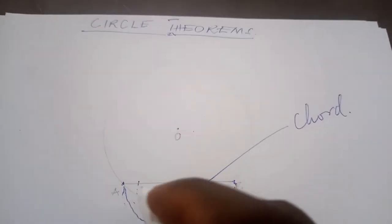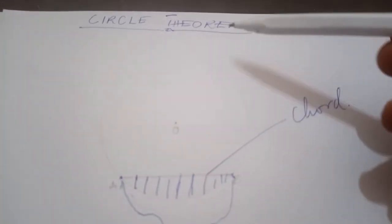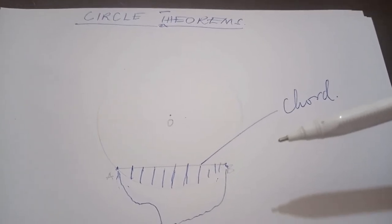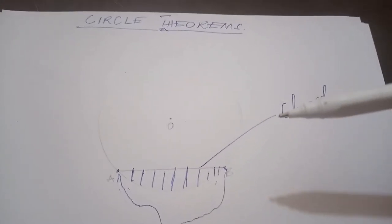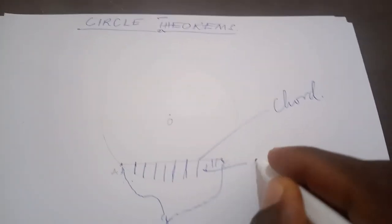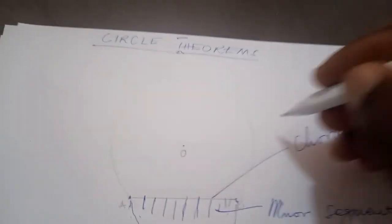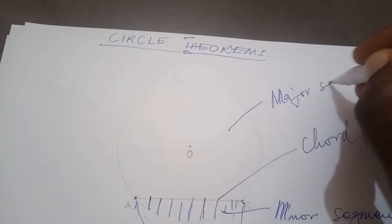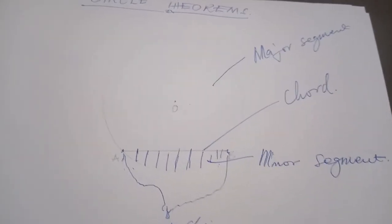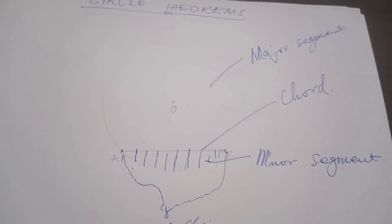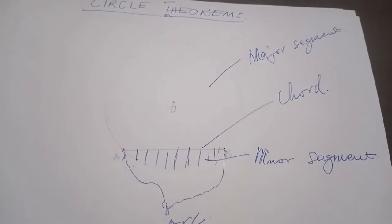Taking this first circle, this chord AB divides the circle into two segments. One of the segments is the shaded region here, and the part that is not shaded is another segment. When the chord divides the circle into two segments that are not equal, the smaller segment is called the minor segment and the bigger segment is called the major segment. In the case of the diameter, it divides the circle into two equal parts because it passes through the center, giving us two equal segments — those would be semicircles.